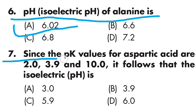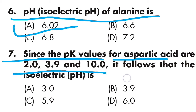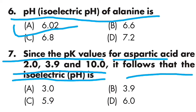Question number seven: since the pK values of aspartic acid are 2.0, 3.9, and 10.0, the isoelectric pH is — Option A is 3.0, Option B is 3.9, Option C is 5.9, Option D is 6.0. Option A is correct: the isoelectric pH is 3.0.